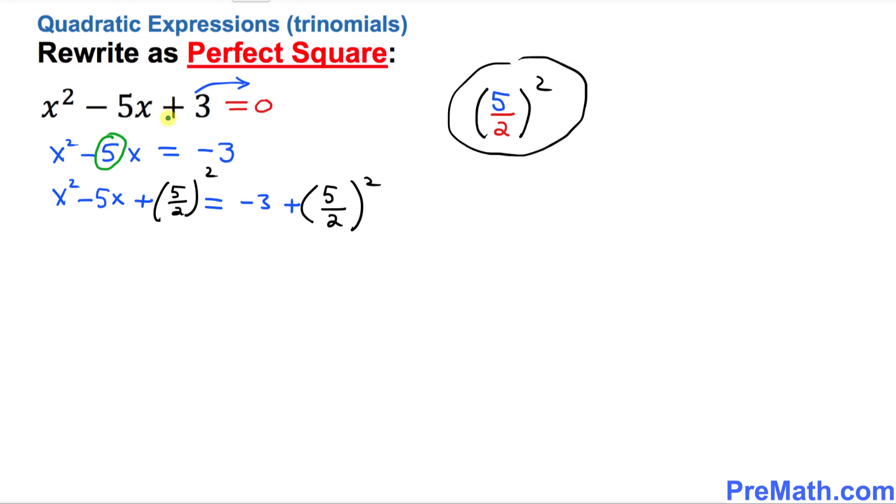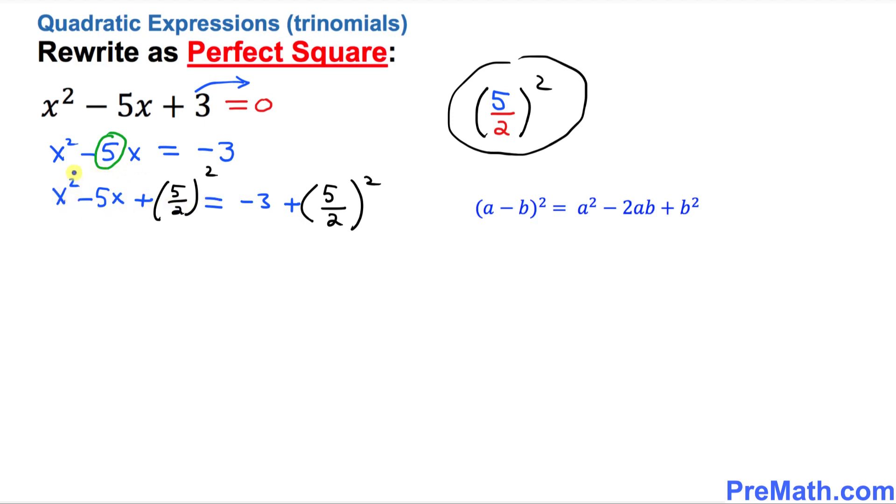Now I want you to look at the left hand side. This left hand side represents a complete square. So we're going to use this well-known formula to put it in a complete square form.